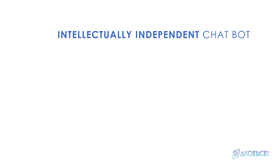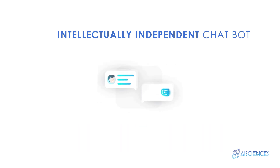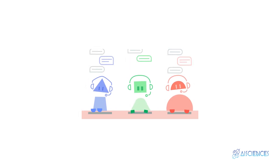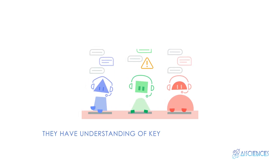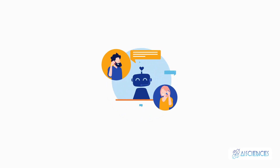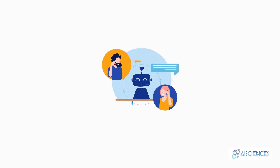Intellectually independent chatbot. These are bots that are based on machine learning, which learn from users' inputs and requests. These chatbots are trained to get an understanding of keywords and special phrases that enables them to reply. As time passes, they train themselves and become more reliable and efficient. In simple words, you can state that these bots learn with experience.